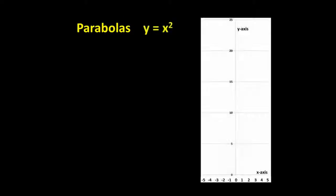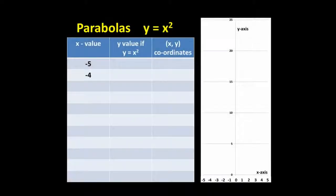A parabola is the curve produced on a Cartesian plane by the general equation y equals x squared. Let's draw a parabola taking the x values from negative 5 to positive 5. Since y equals x squared, when x equals negative 5, y equals negative 5 squared, which is 25. We can plot the point (-5,25) on the graph here.